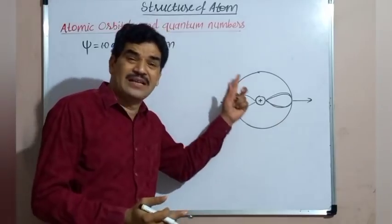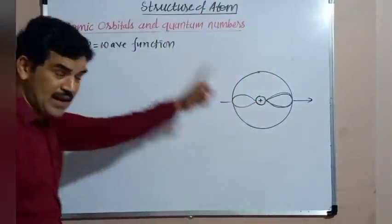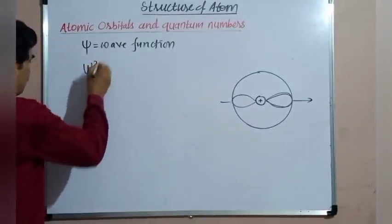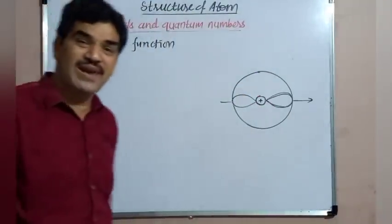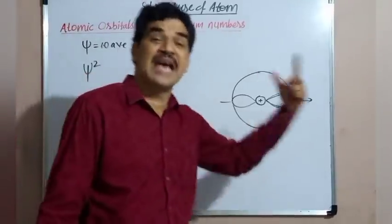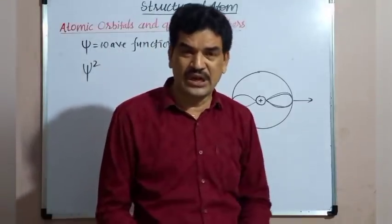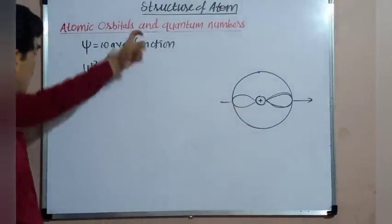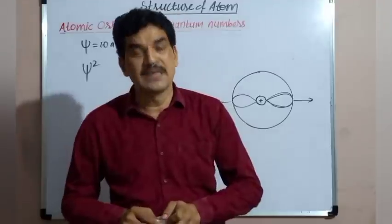Different atomic orbitals in the atom have different size, different shape, and different orientation. This shape, size, and orientation of the atomic orbital corresponds to the value of psi squared. As we have different values of psi, we get different values of psi squared, and the different values of psi squared give the atomic orbitals different shape, size, and different orientations. Because different atomic orbitals have different values of psi squared, they have different shape, size, and orientation.